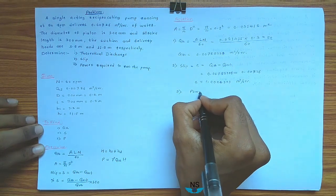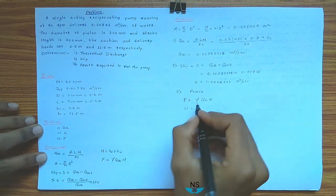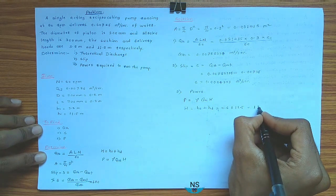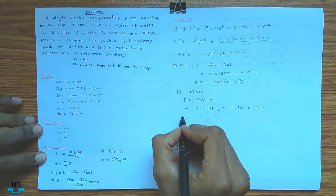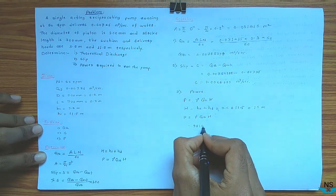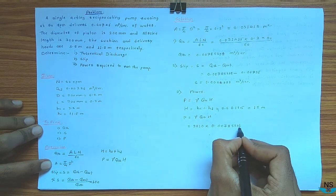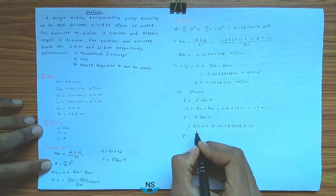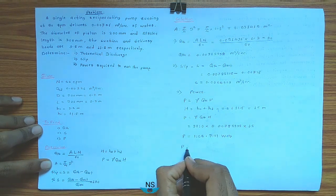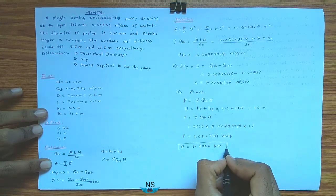Third, power required to run the pump: P is equal to γ into Q_theoretical into H. First find H: H is equal to HS plus HD, so 3.5 plus 11.5, which is equal to 15 meter. Now P is equal to 9810 into 0.00785398 into 15, so power P is equal to 1155.7 watt, or dividing by 1000, P is equal to 1.1557 kilowatt — this is the required power for the pump.